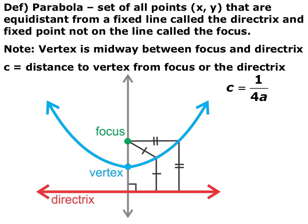This is the geometric definition of a parabola — pause the video and write this down. The geometric definition of a parabola is the set of all points that are equidistant from a fixed line called a directrix and a fixed point not on the line called a focus.